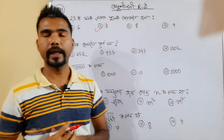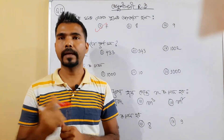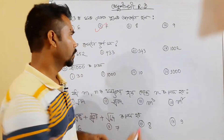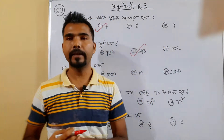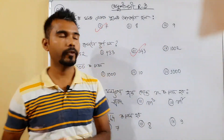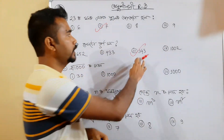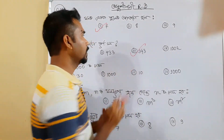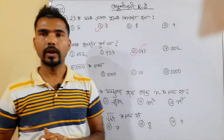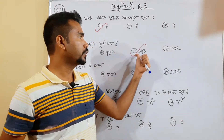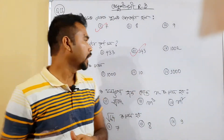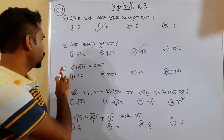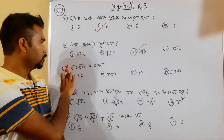One is 27, one is 29, one is 29, three is 7, and 24. Here, the answer is 24. Question No. 12, Question No. 13.